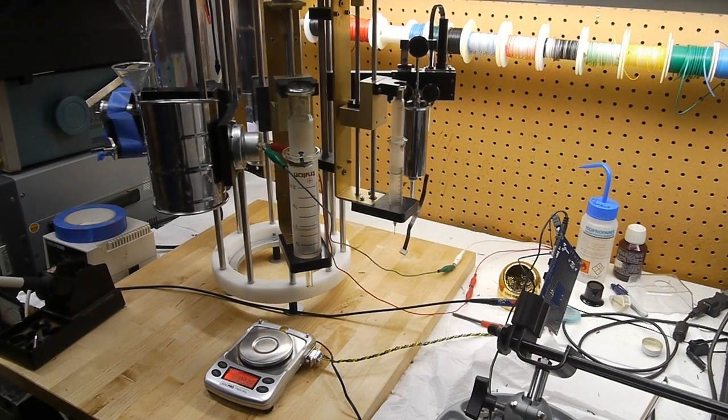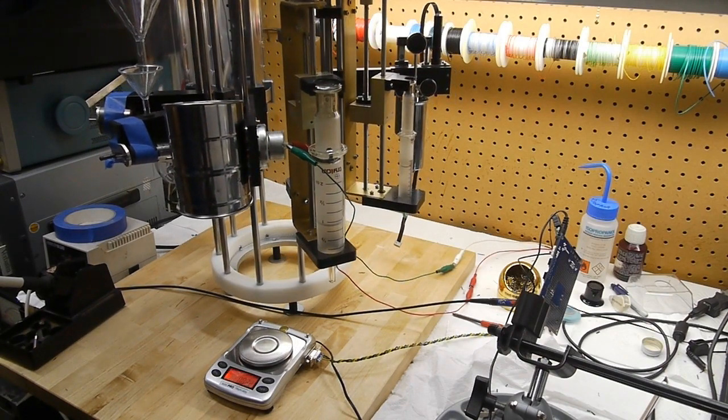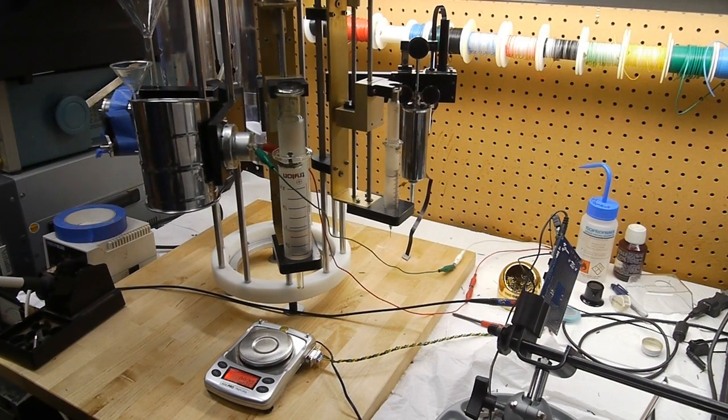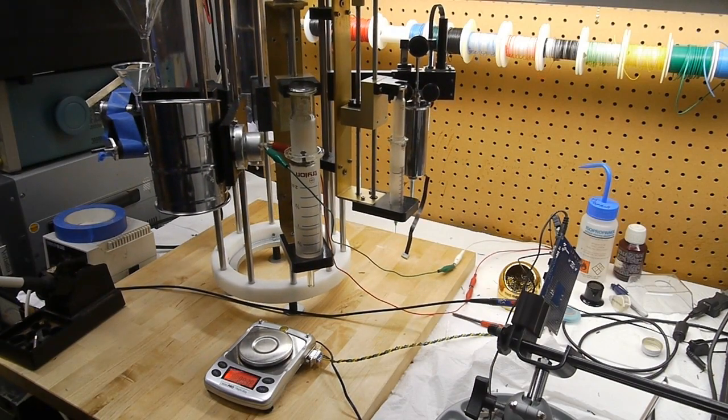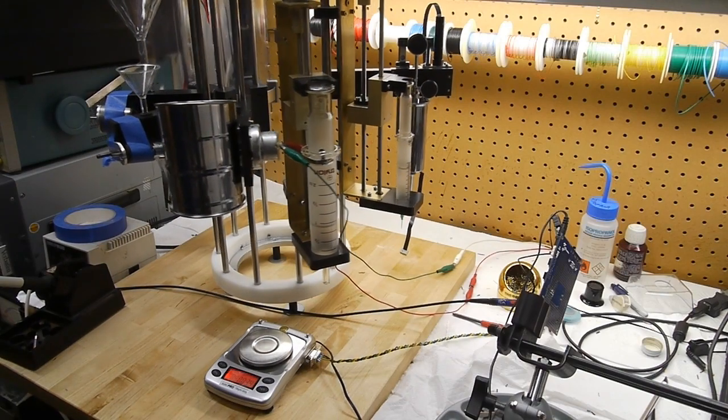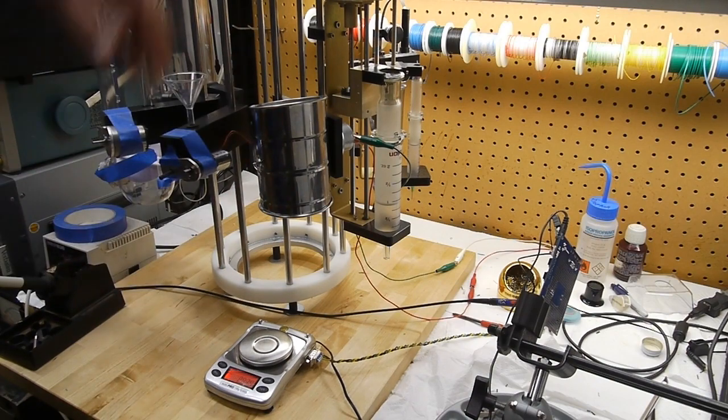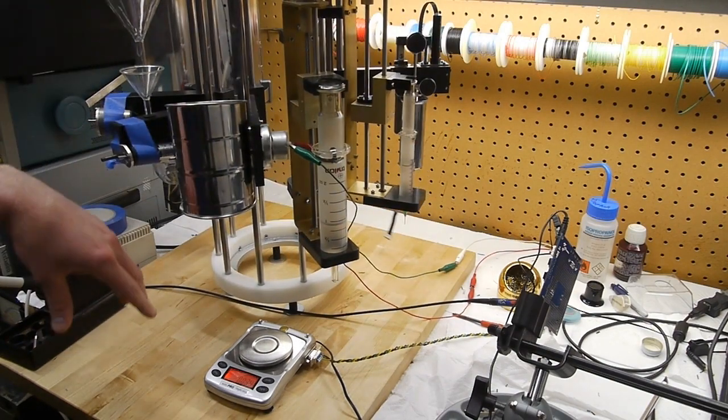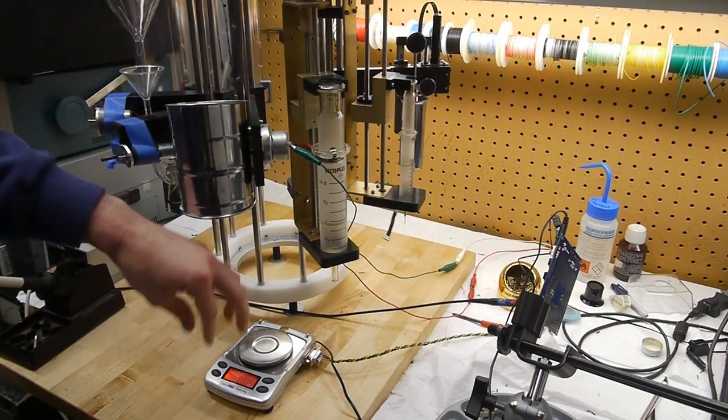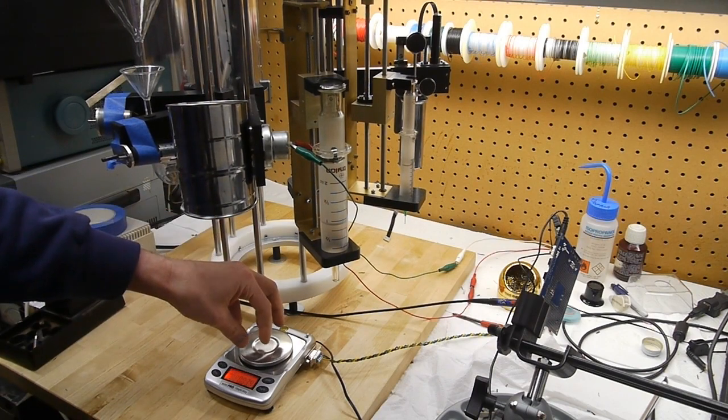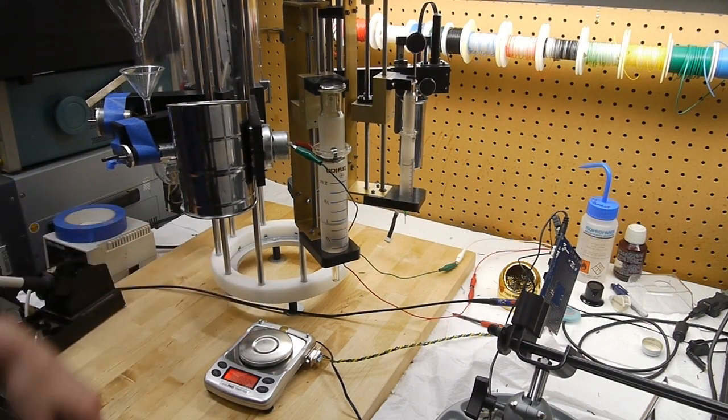That leaves two unpopulated stations here. One of them is going to be for baking soda. The other is going to be for a mixer which I may or may not implement in this first version. The idea is that the carousel would turn around, dispense an ingredient on the scale, turn to the next station, dispense that ingredient, and then turn to the mixer station. The mixer station would actually go down into the cup and mix the ingredients together.